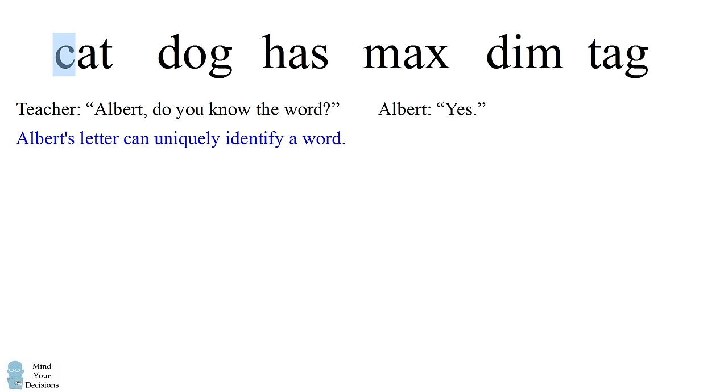So we need to find out which letters appear exactly once in this list of words. We can go through all of the words, and we can figure out which of these letters uniquely appear one time in this list. These are the letters C, O, H or S, X, and the letter I.